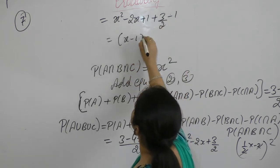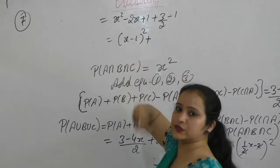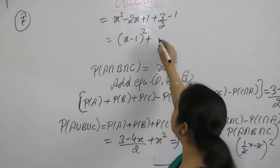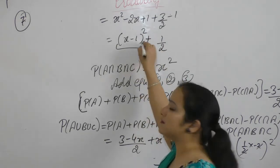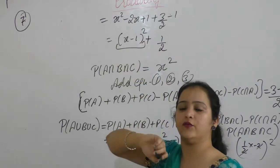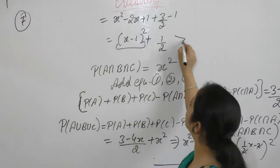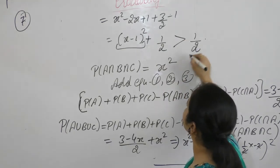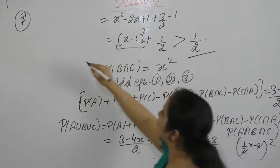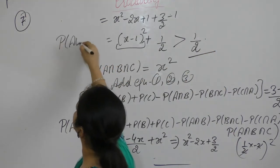This gives (x minus 1) whole square plus 1 by 2. The whole square is always positive. Positive plus 1 by 2 is definitely greater than 1 by 2. This is what we want to prove.